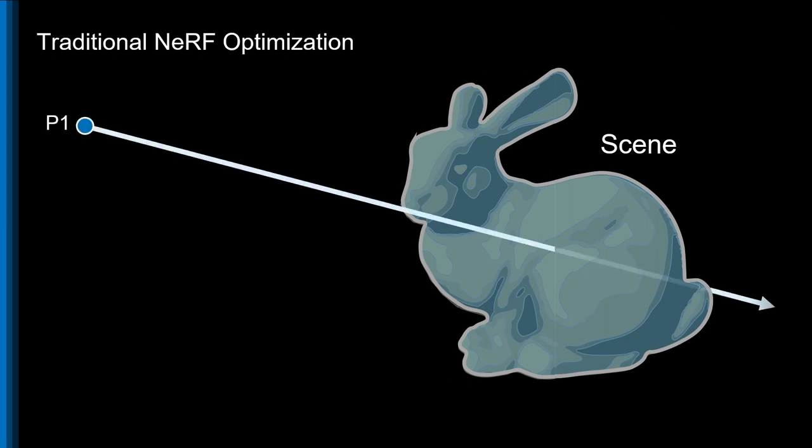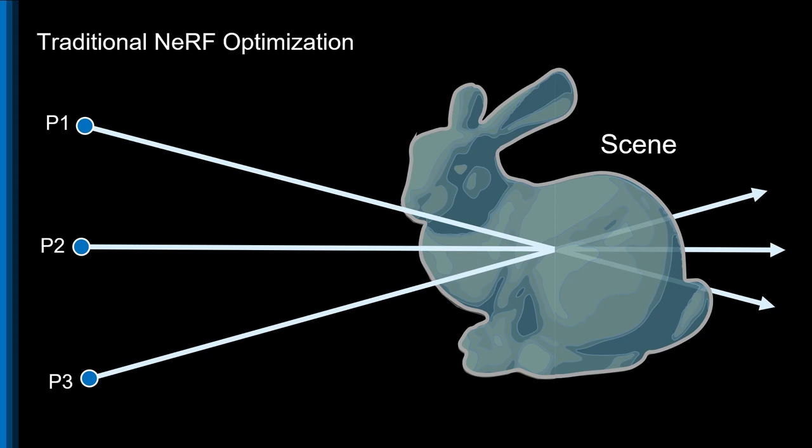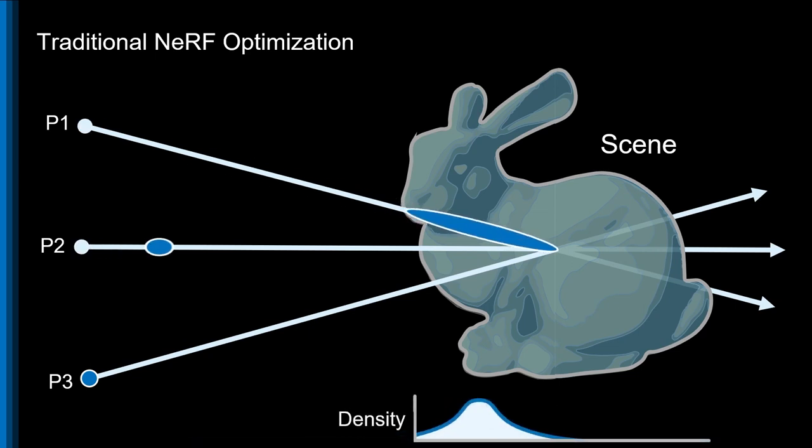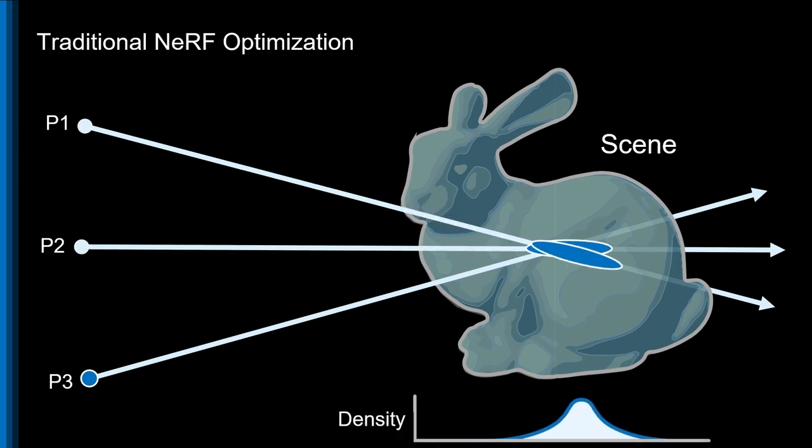Given multiple views of a scene, from different camera positions, NeRF models iteratively refine the position and density of points, minimizing photometric loss until they arrive at a high-quality implicit 3D representation of the world.